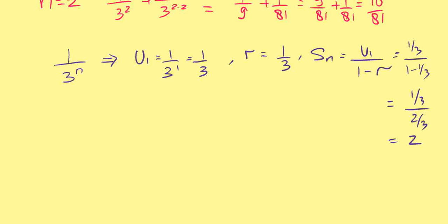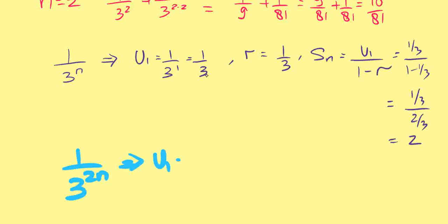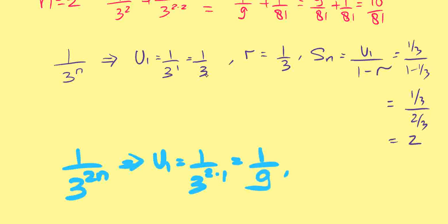For the second part, 1 over 3 to the power of 2n: when n equals 1, the first term is 1 over 9, and the common ratio r is also 1 over 9. So the sum of this infinite geometric series is (1 over 9) divided by (1 minus 1 over 9), which gives us 1 over 8.